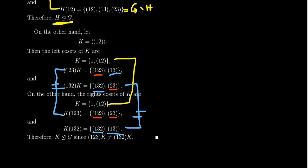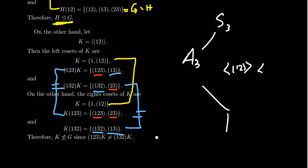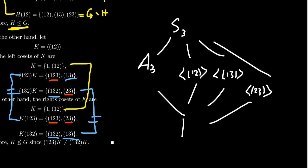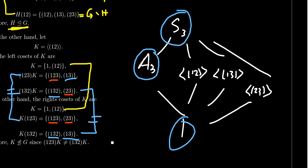Looking at all the subgroups of S3: you have A3, the identity, and then the other subgroups — K generated by (1 2), the cyclic subgroup generated by (1 3) of order two, and the subgroup generated by (2 3) also of order two. For S3, the normal subgroups are going to be the improper subgroup, the trivial subgroup — those are always there — and A3, which has index two. These other three subgroups of order two are not normal. We showed K is not normal, and by similar calculations the other two cyclic subgroups of order two are non-normal in S3.